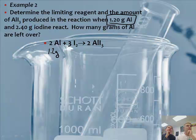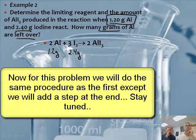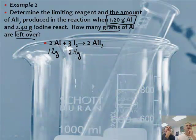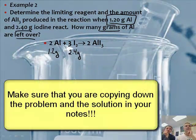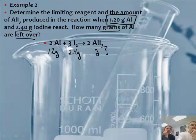So I have 1.2 grams of Al, I'm going to write 1.2 grams here. I have 2.4 grams of iodine. How many grams of aluminum are left over? Oh, and it also says determine the limiting reagent and the amount of AlI3 produced. So let's write grams question mark. So we have a third problem.